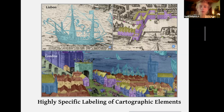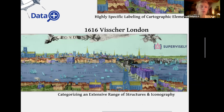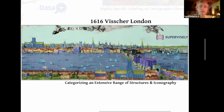Across the map we also labeled many iconic landmarks such as St. Paul's Cathedral, the Tower of London, and the Globe Theatre. In this way, London provided fresh and expansive content but also required a deeper engagement with nuances of the mapping process itself.